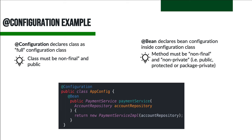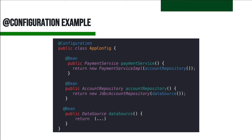Here's a full example with multiple beans declared. We have the AppConfig class annotated with @Configuration, containing a paymentService bean, an accountRepository bean, and a dataSource bean. The dataSource returns the database connection. The accountRepository bean takes the dataSource as a parameter, and the paymentService bean takes the accountRepository as a dependency. Spring will manage all this automatically — creating the dataSource first, passing it to accountRepository, and then injecting accountRepository into paymentService.